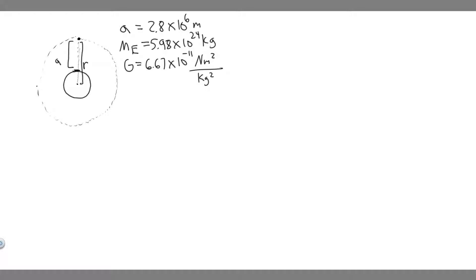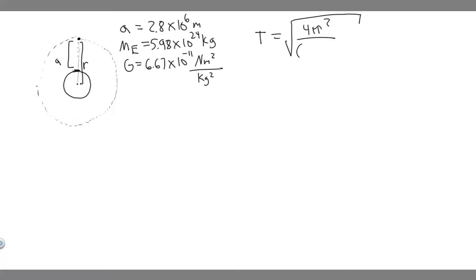So the way we're going to solve this is by using Kepler's third law, which allows us to solve for the period of something orbiting around a planet. The formula is T equals the square root of 4 pi squared divided by G times the mass of the Earth, multiplied by the radius cubed.